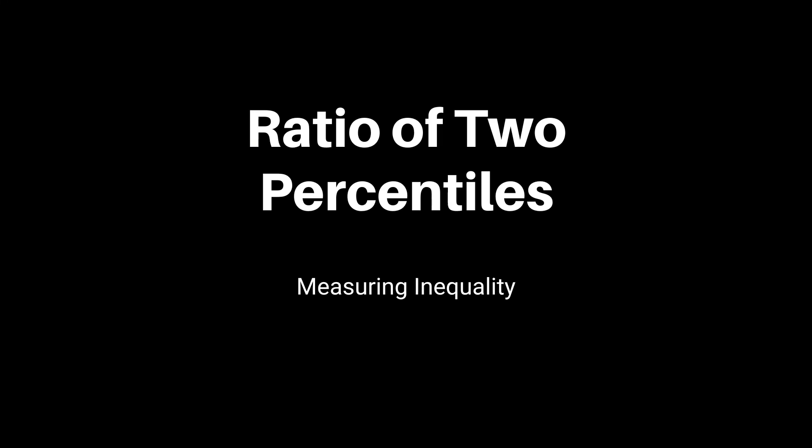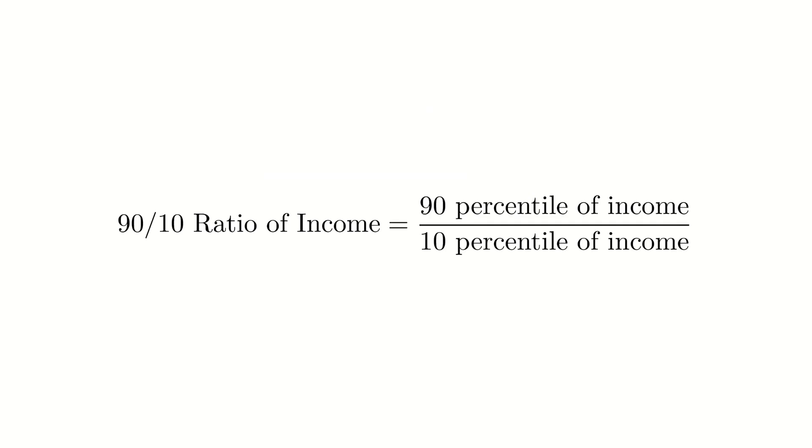One intuitive way to measure income inequality is to consider the ratio of two percentiles. For example, the ratio of the 90th percentile and 10th percentile of income tells us the income disparity between two points of the income distribution. By definition, this ratio is always greater than 1. The higher this ratio, the more unequal the income distribution.